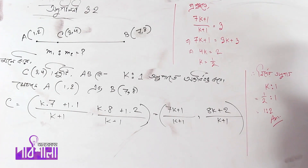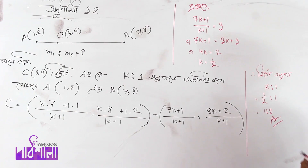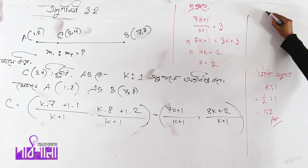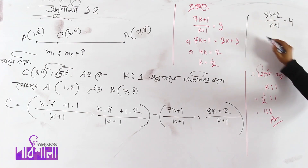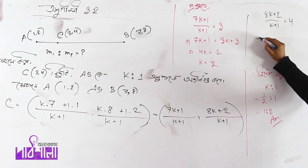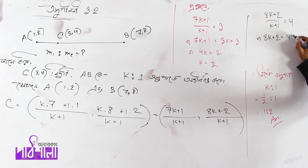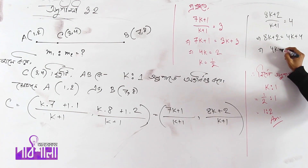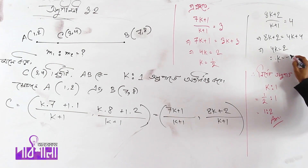We have to ask the question about the problem. The problem is that 8k plus 2 divided by k plus 1 is to 4. That means 8k plus 2 equals 4k plus 4. That means 4k equals 2. That means 1 is to 1.